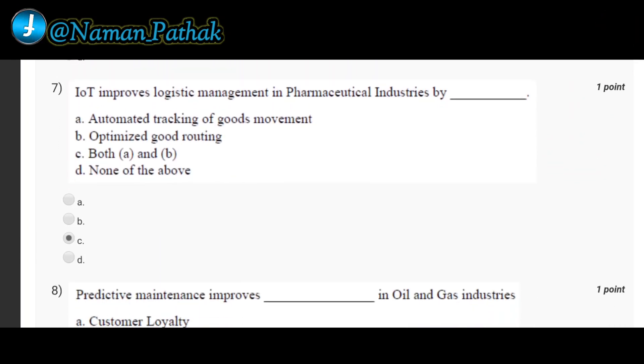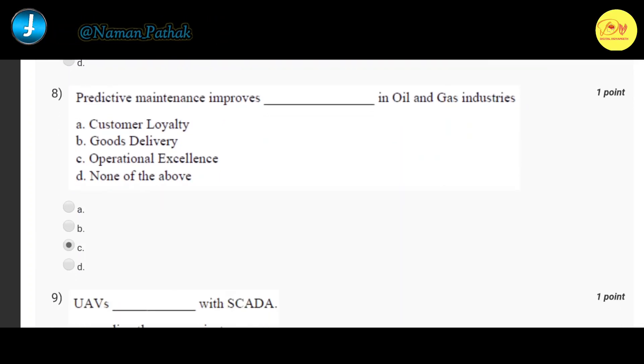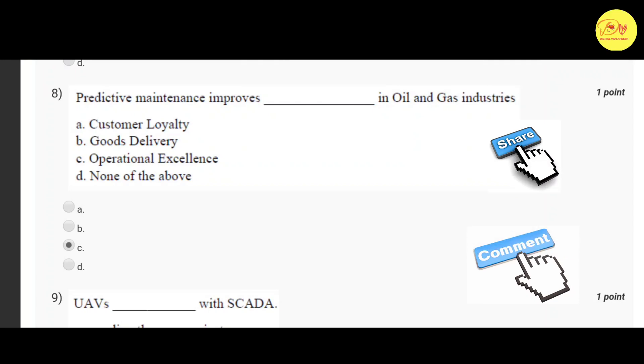Our seventh question is IoT improves logistic management in pharmaceutical industries by. Correct option is C, both A and B, that is automated tracking of goods movement, optimized good routing. Our eighth question is predictive maintenance improves dash in oil and gas industries. Correct option is C, operational excellence.